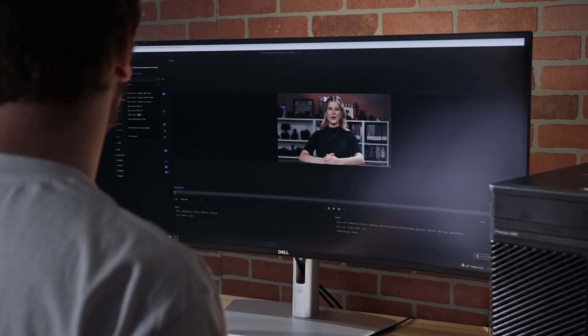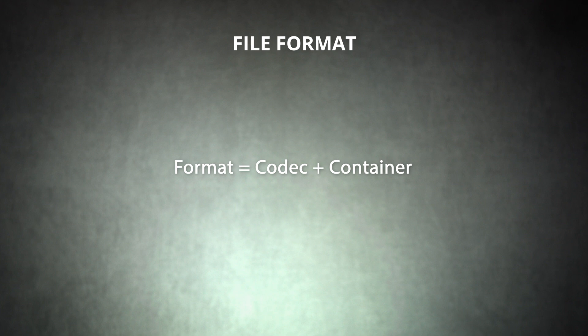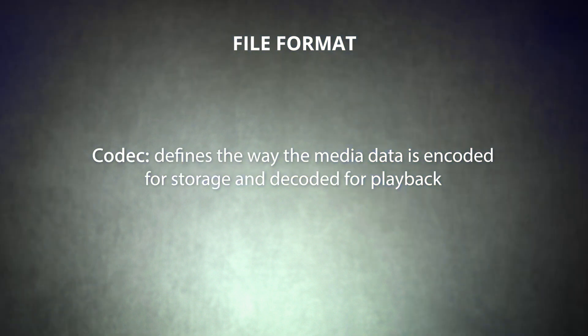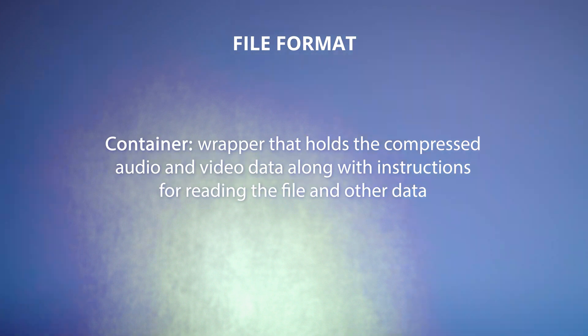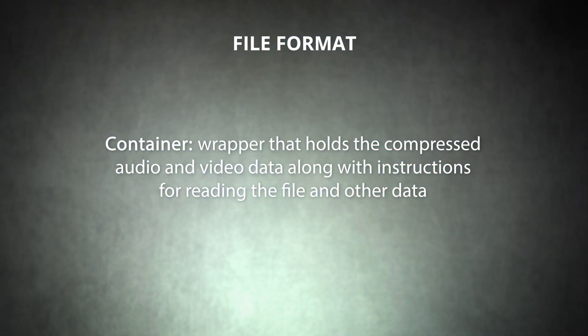When you export a video, you need to choose a file format. In video production, the file format refers to the codec and container used to store video and audio data. A codec defines the way the media data is encoded for storage and decoded for playback. A container is a wrapper that holds the compressed audio and video data along with instructions for reading the file and other data like timecodes and subtitles. So how do you know which video format is right for your project? To answer this, we'll need to know how your video will be viewed.